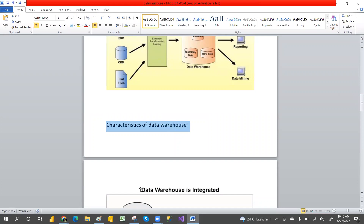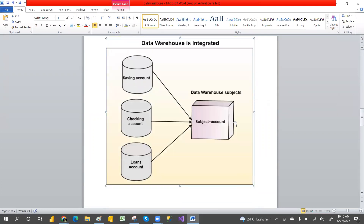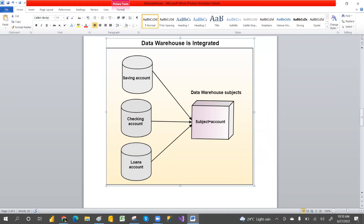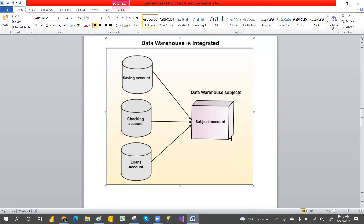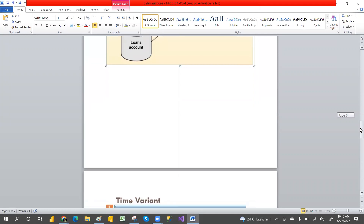The first characteristic is Integrated. This means data is collected from different sources and combined into one area. For example, if you take bank data, it will have savings data, checking accounts, and loans — all stored in one area. Combining data into one area is called integrated.